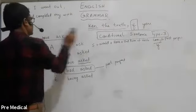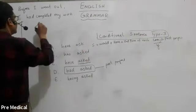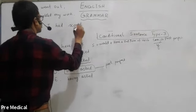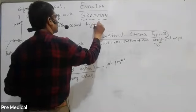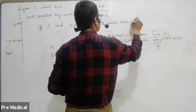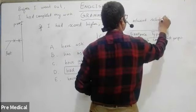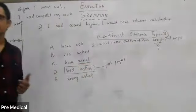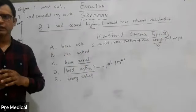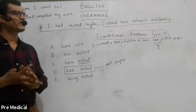One more example that can help you understand a bit more easily — the same idea: 'If I had scored higher, I would have achieved a scholarship.' Now this has two parts again. Interestingly, in all conditional sentences we can change the place of clauses. I can say, 'I would have achieved a scholarship if I had scored higher' — that is possible.